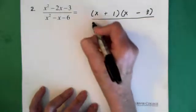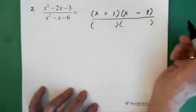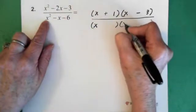And the bottom, again, just bracket, bracket. To get the x², only one option: x and x.